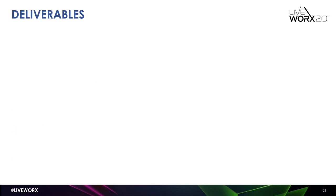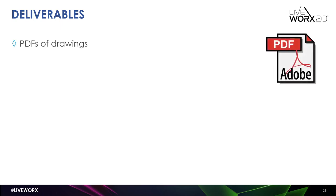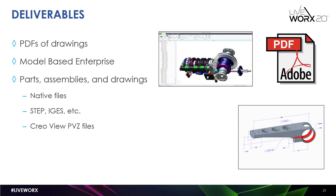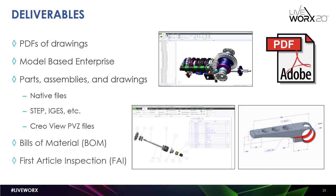Along with your design process, you have to establish standards for what your deliverables are. You will likely have to deliver more than drawings. If you are doing drawings, are PDFs going to be your file record, or are you going to be a model-based enterprise? Are you going to use both drawings and model-based definition? Other considerations for your deliverables include: what file formats will you provide to external customers — native Creo files, STEP files, or CreoView PVZ files? Bills of material — will these reside on your drawings, or is your PDM system the source of truth? And how are you going to manage first article inspection information?